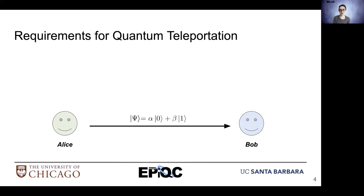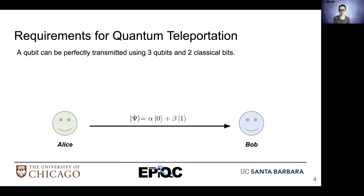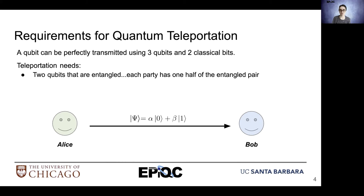So what are the requirements of quantum teleportation? If we have three qubits and two classical bits, we can perfectly transmit a qubit. For teleportation, we need two qubits that are entangled, and each party has one half of this entangled pair.